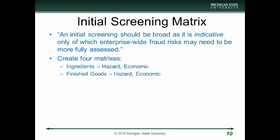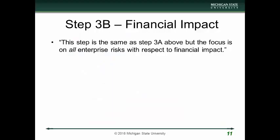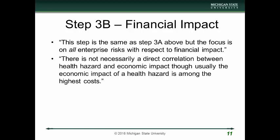There are four matrices to work with: ingredients and finished goods each have a hazard matrix and an economic matrix. This is a five-by-five matrix — here we have Europe and spices as very high, which will come into play when I show where it falls on the corporate risk map. For financial impact, Step 3B is the same as Step 3A but focuses on all enterprise risks with respect to financial impact. There's not necessarily a direct correlation between health hazards and economic impacts, though usually the economic impact of a health hazard — such as a recall, costs associated with illness, and legal liability lawsuits — is among the highest costs.